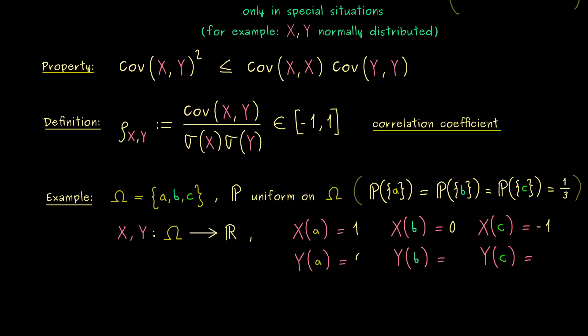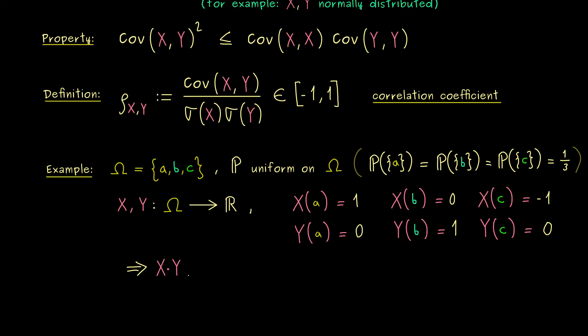Now, most importantly, I want that Y is equal to 0 whenever X is not equal to 0. Hence, only for B we can have a non-vanishing value. Hence, this means that the new random variable given by X times Y is simply the 0 function. Therefore, also the expectation of this random variable will be equal to 0.